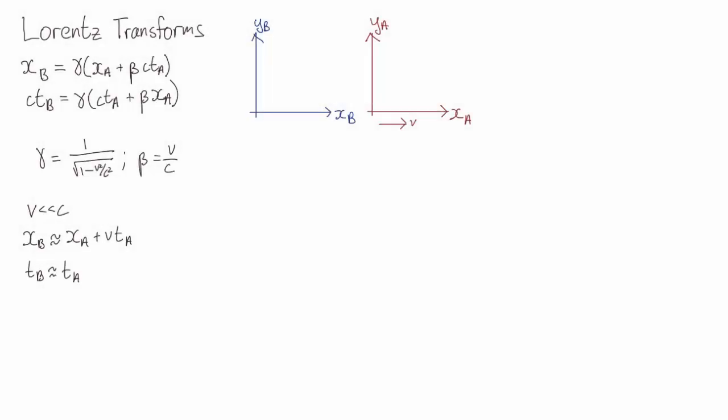So a question we might have is, now we can transform from Alice's frame to Bob's frame. What about the other way, from Bob's frame to Alice's frame?